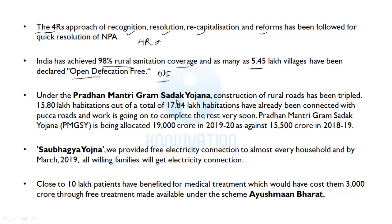Under Pradhan Mantri Gram Sadak Yojana, construction of rural roads has been tripled — that's a very important achievement. Out of a total 17.84 lakh habitations, 15.8 lakh have already been connected with pucca roads. Pradhan Mantri Gram Sadak Yojana is allocated Rs. 19,000 crore in 2019-20, as against Rs. 15,500 crores in 2018-19, showing a massive increase in fund allocation.